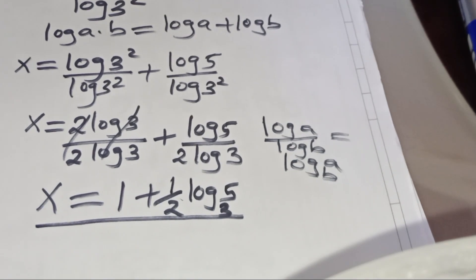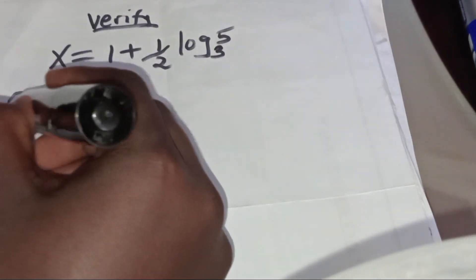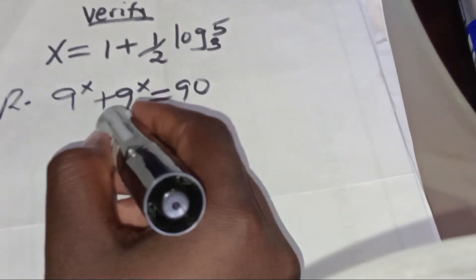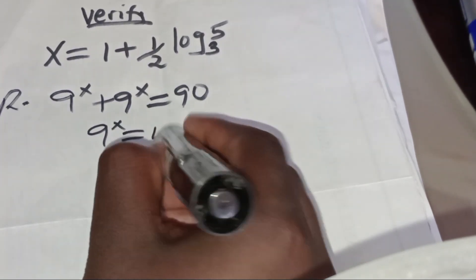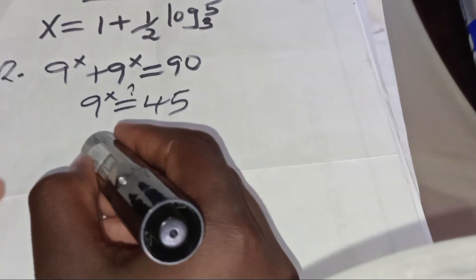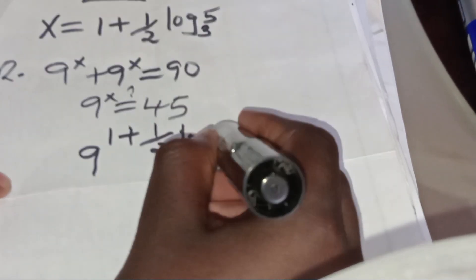Let's verify that this value of x, which is 1 plus one-half log₃5, actually satisfies the equation. Recall that we simplified the equation to 9 to the power of x equals 45. Let's substitute the value of x, so we have 9 to the power of (1 plus one-half log₃5), and this should give us a value of 45.